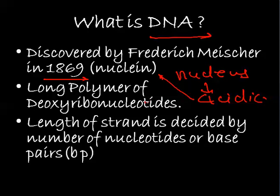DNA is a long polymer of deoxyribose nucleotides and consists of many polymers. The length of the DNA is decided by the number of nucleotides it consists of. Nucleotides come together to form dinucleotides, then polynucleotides, and in the same way a complete strand is formed.